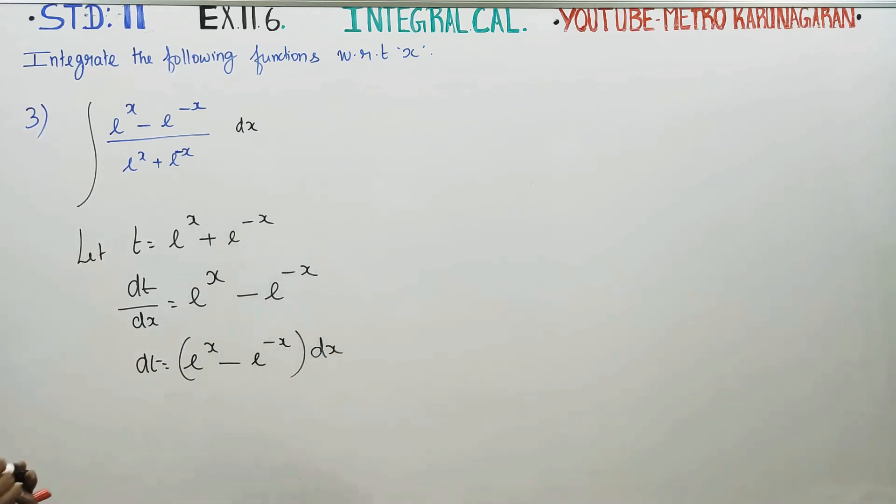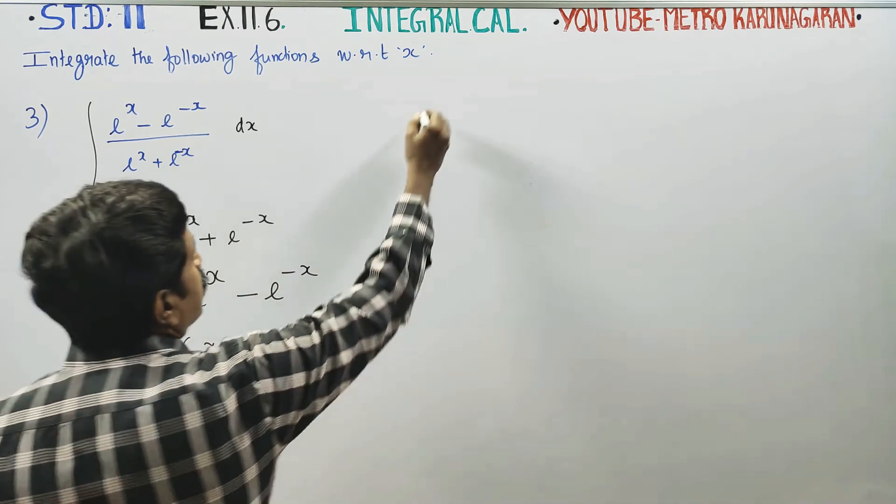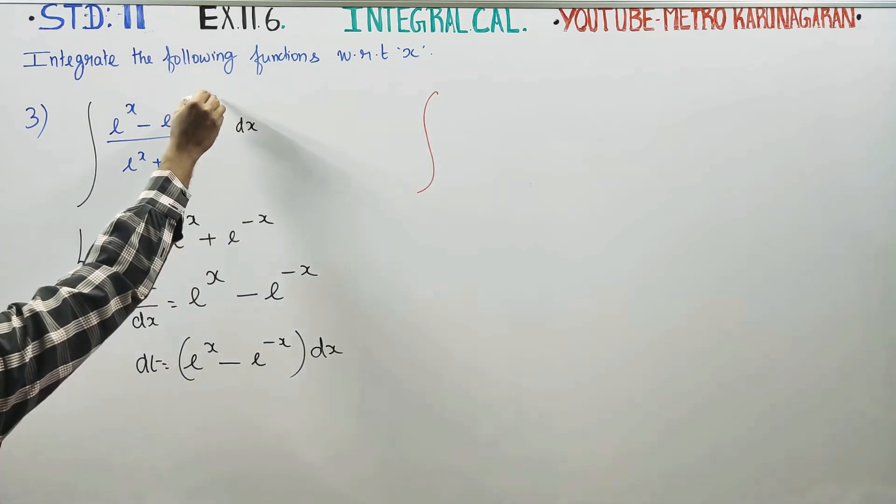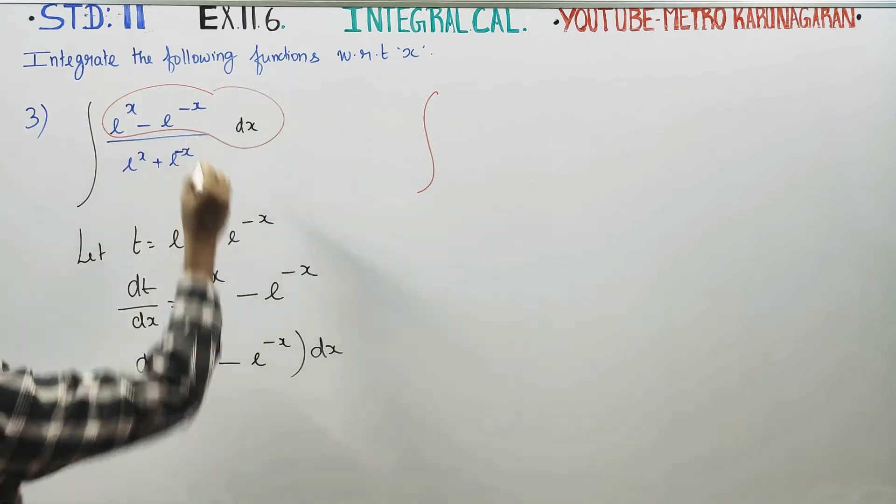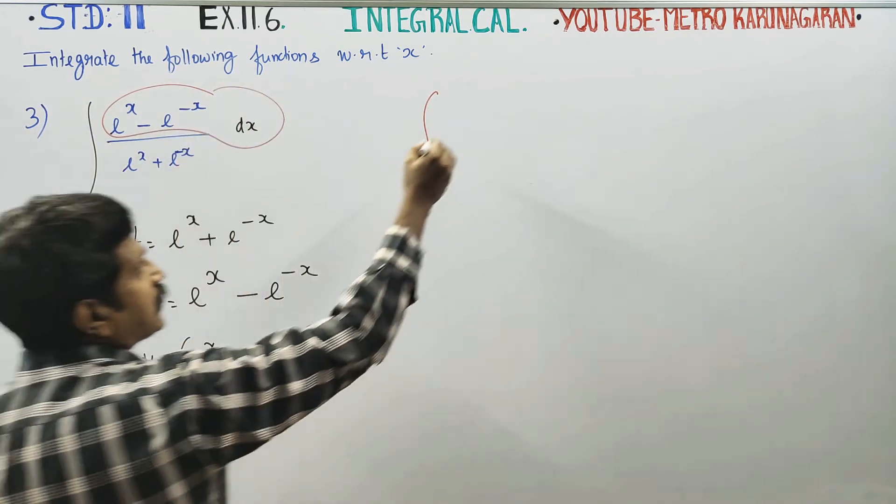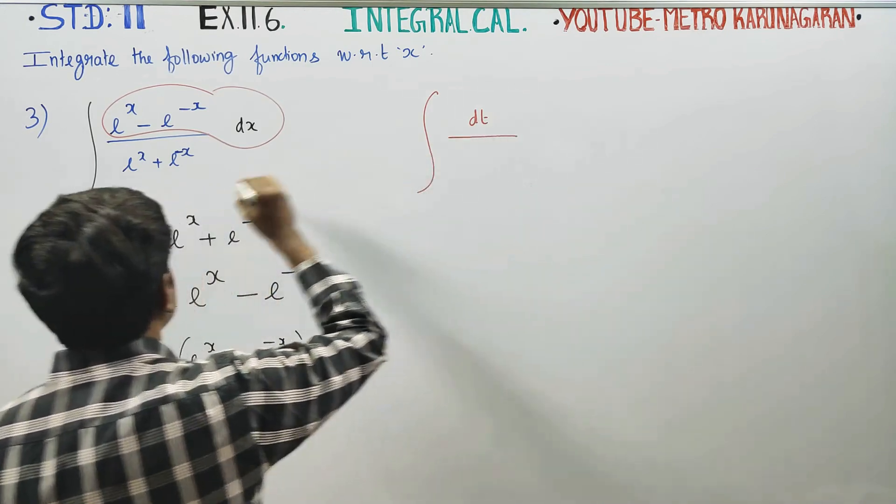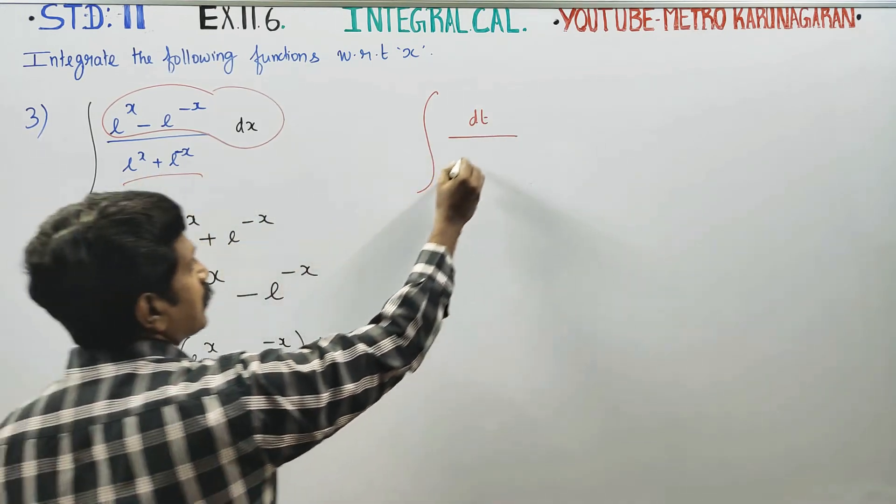This is the main sum. You can see the integration - you can see the numerator. dT is the numerator, and T is the denominator.